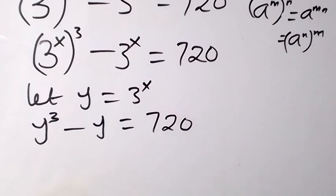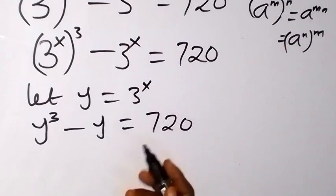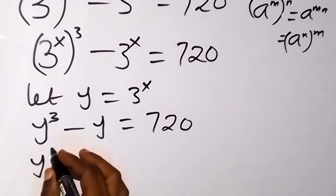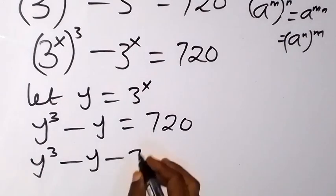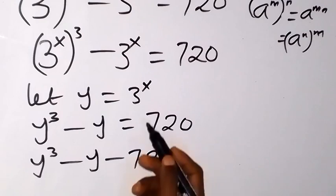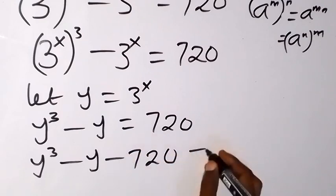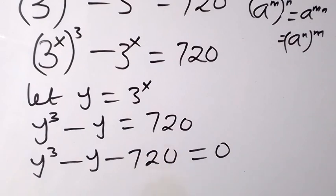Let's take 720 to this side so that one side will be 0. We have y cubed minus y minus 729 equals 0, because the positive 720 on that side comes over and becomes negative.